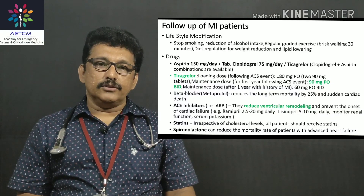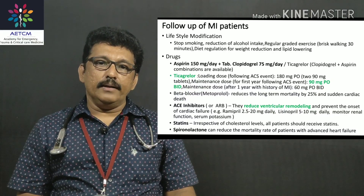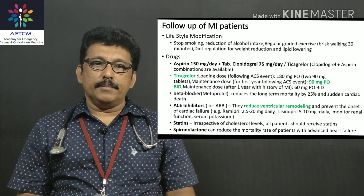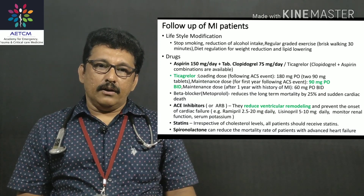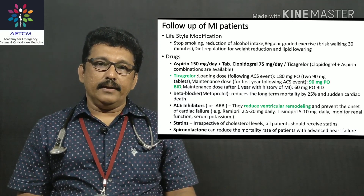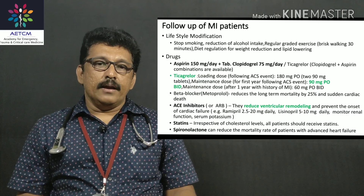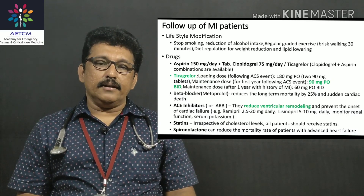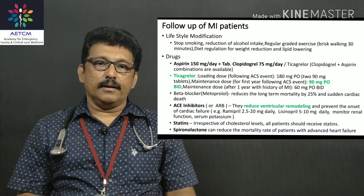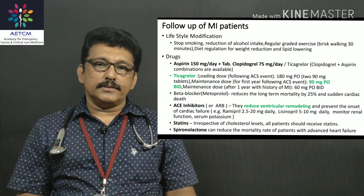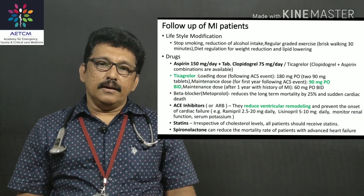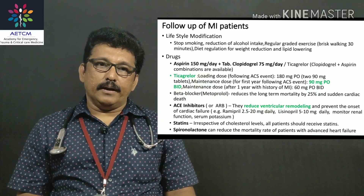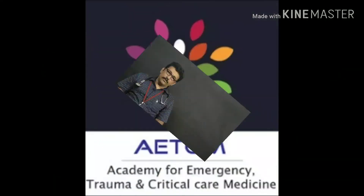An ACE inhibitor should be started in all patients with myocardial infarction to reduce ventricular remodeling. The ideal ACE inhibitor is ramipril 2.5 to 20 mg per day. Statins such as atorvastatin 40 mg per day or rosuvastatin 20 mg per day should be continued. Spironolactone is another drug that can prevent ventricular remodeling and should be continued.